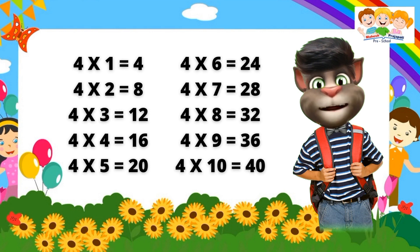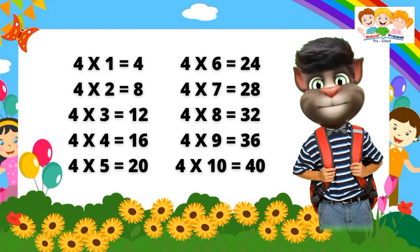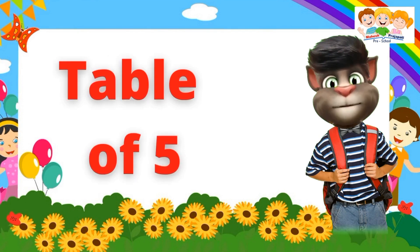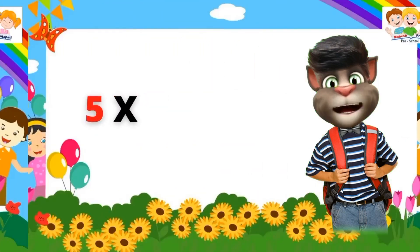Four ones are four. Four twos are eight. Four threes are twelve. Four fours are sixteen. Four fives are twenty. Four sixes are twenty-four. Four sevens are twenty-eight. Four eights are thirty-two. Four nines are thirty-six. Four tens are forty.